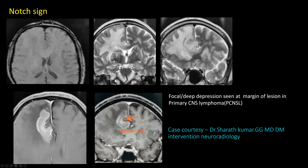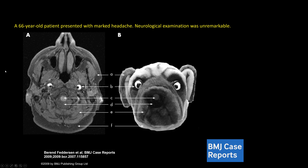Next: a 66-year-old patient presented with marked headache; neurological examination was unremarkable. Along the internal carotid arteries, you can see peripheral hyperintense areas in bilateral internal carotid arteries, which are mural hematomas, with a residual lumen visible. This is classical for bilateral internal carotid artery dissection.